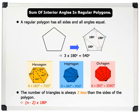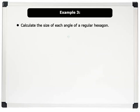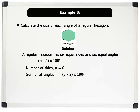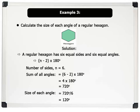Let us see our final example. Example three: calculate the size of each angle of a regular hexagon. Solution: a regular hexagon has six equal sides and six equal angles, so we will use the formula (n minus 2) times 180 degrees. The number of sides is six, so the sum of all angles is (6 minus 2) times 180, which equals four times 180, giving 720 degrees. Since there are six angles, the size of each angle is 720 divided by 6, which gives 120 degrees. That's amazing!